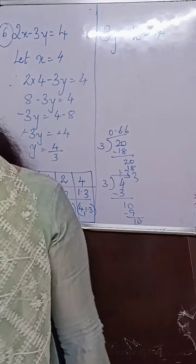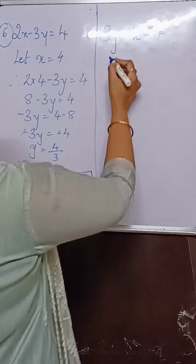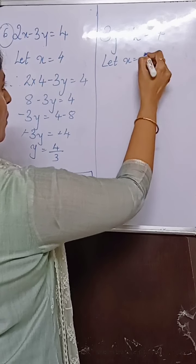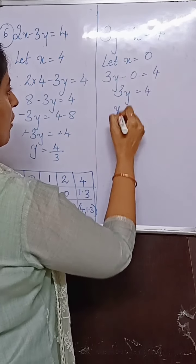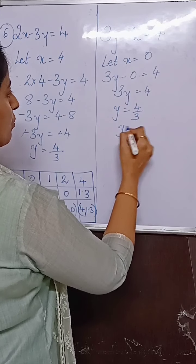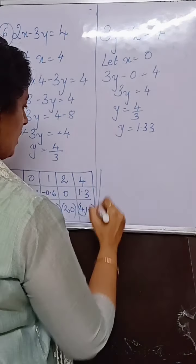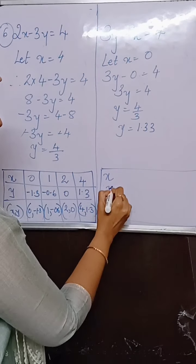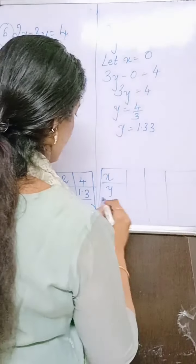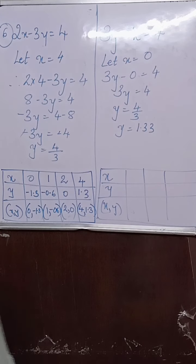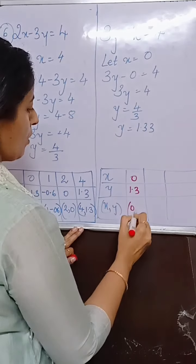Similarly, find the ordered pairs for the second equation. Let x be 0. So 3y minus 0 equals 4, giving 3y equals 4, therefore y equals 4 upon 3, which is approximately 1.3. When x is 0, y is 1.3. Ordered pair: 0 comma 1.3.